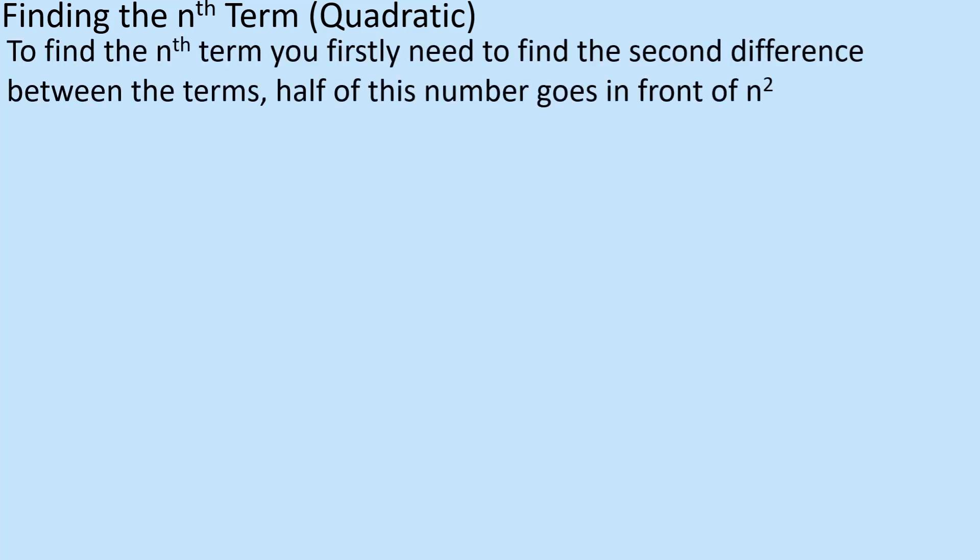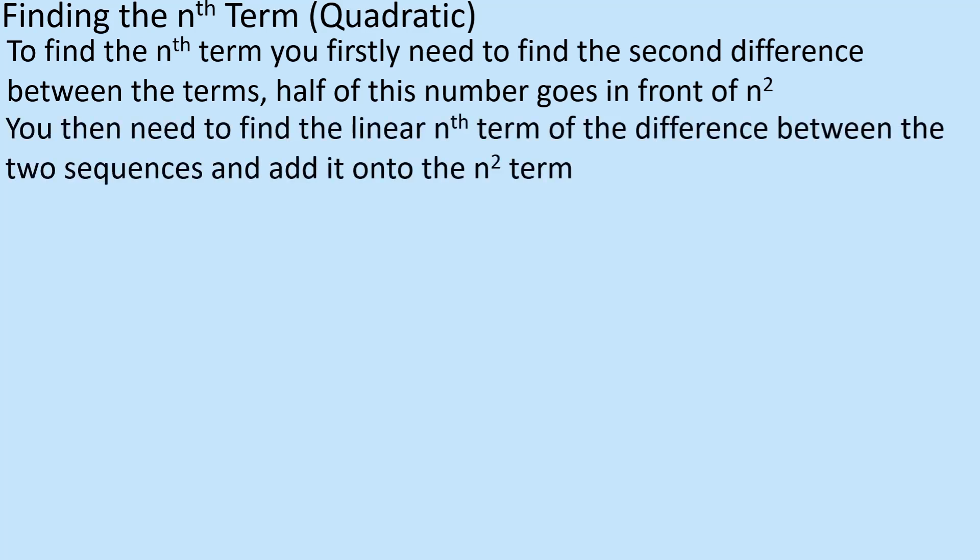To find the nth term you firstly need to find the second difference between the terms, then half the number that goes in front of n squared — that's the first step. Then you need to find the linear nth term of the difference between the two sequences and add it on to the n squared term. That's quite a mouthful, so it's difficult to look at that in isolation without an example.